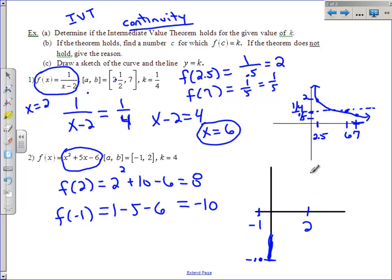At negative 1, we were way down here at negative 10. I didn't draw my line low enough. And then at 2, we were way up here at 8. So we've got this dot down here and we've got this dot up here. Do we have to cross 4? Yes, that is a horizontal line that's in between negative 10 and 8.